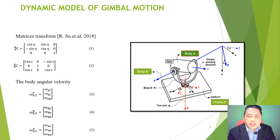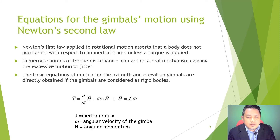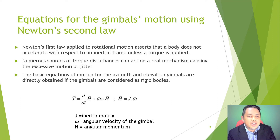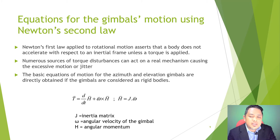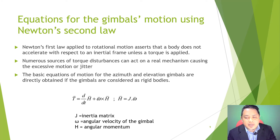From Arja et al. 2018, the equation for gimbal motion uses Newton's second law. Newton's second law applied to rotational motion asserts that a body does not accelerate with respect to an inertial frame unless a torque is applied. Numerous sources of torque disturbance can act on a real mechanism, causing excessive motion or jitter. The basic equations of motion for azimuth and elevation gimbal are directly obtained if the gimbals are considered as rigid bodies. Here are the two equations for torque and angular momentum.